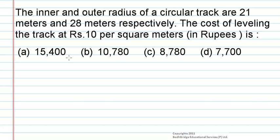The inner and outer radius of a circular track are 21 and 28 meters respectively. The cost of leveling the track at 10 rupees per square meter is: